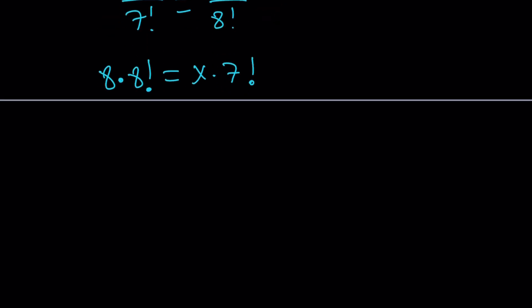8 factorial contains 7 factorial. So I can write it as 8 times 7 factorial. And since 7 factorial is not 0, I can just go ahead and divide both sides by that. And that's going to help us a lot, leaving us with x equals 8 times 8. And what is that equal to? I think it's 64?